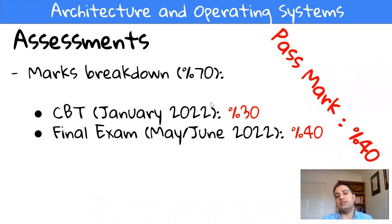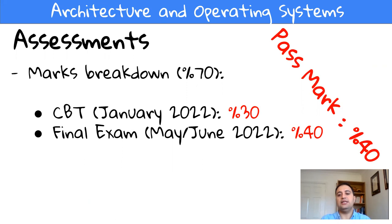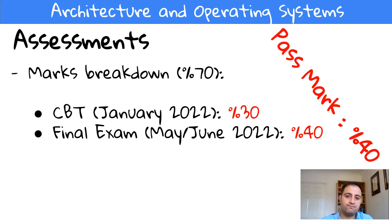The pass mark is 40% of the total mark. 70% is coming from the computer side, 30% is coming from the maths. I put them together — if you get above 40%, you will pass; less than that, you fail. So 40% of both parts combined, not individual assessments.